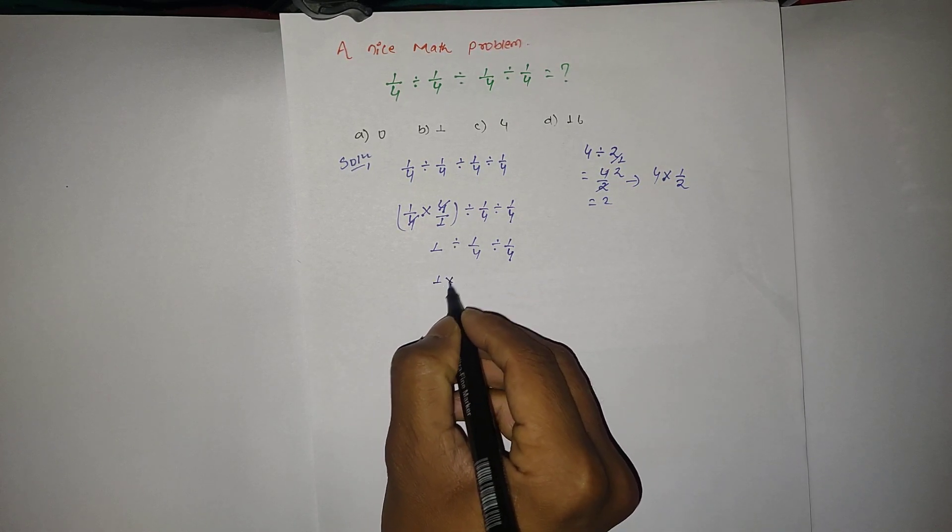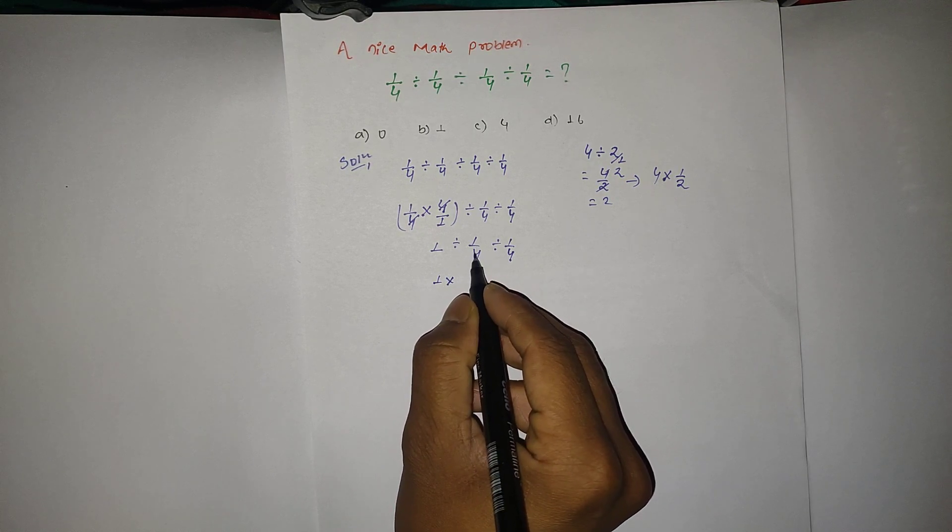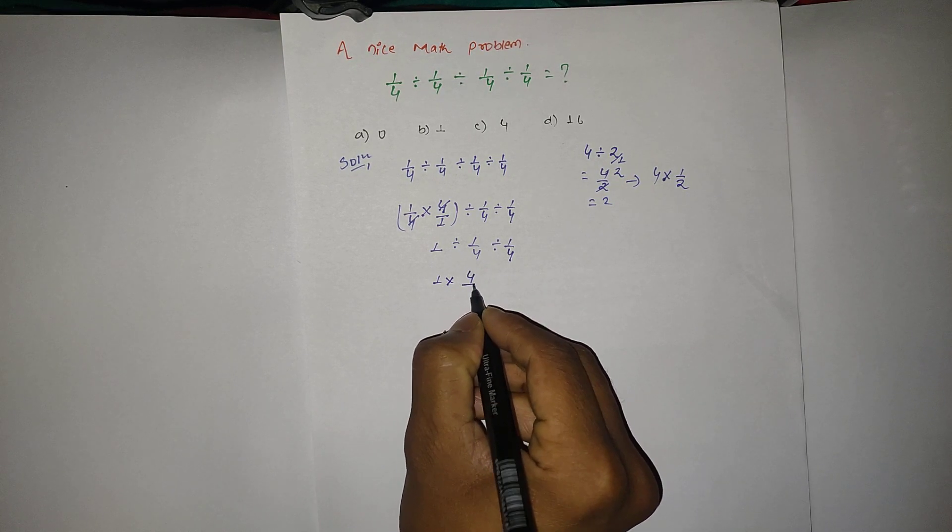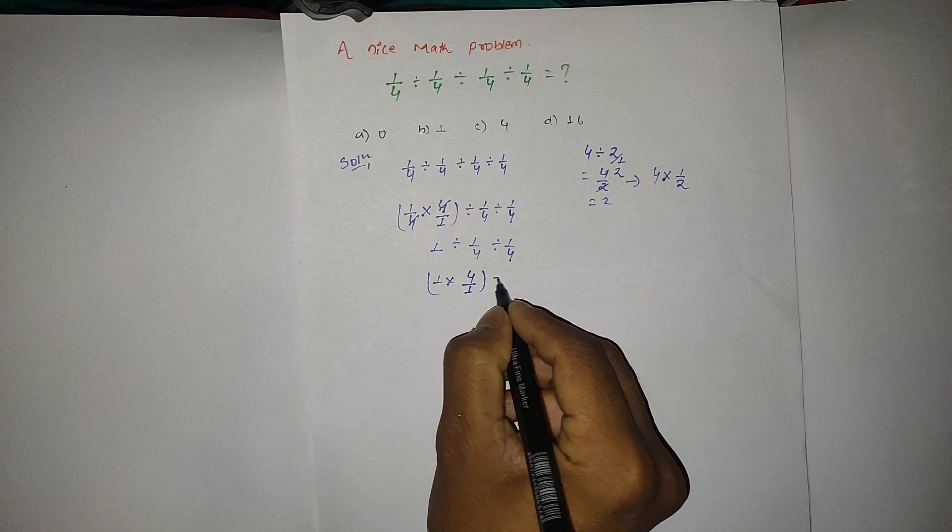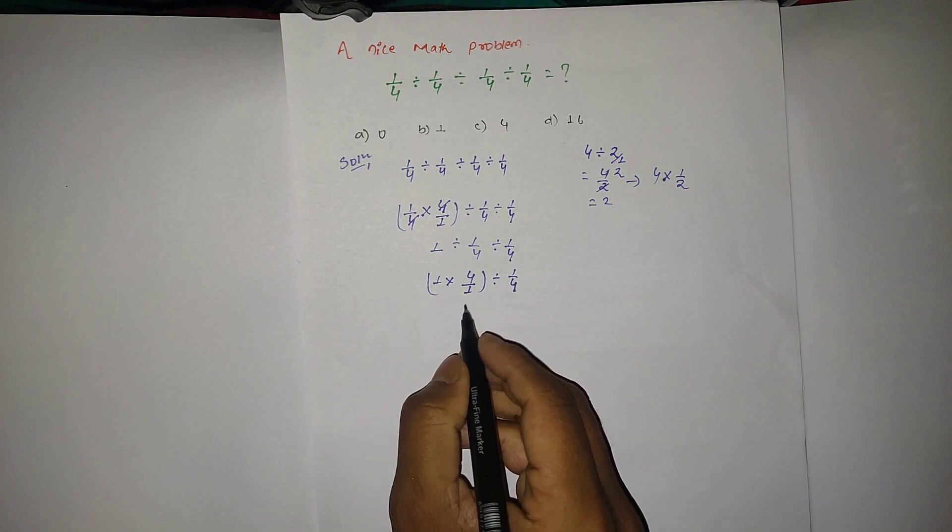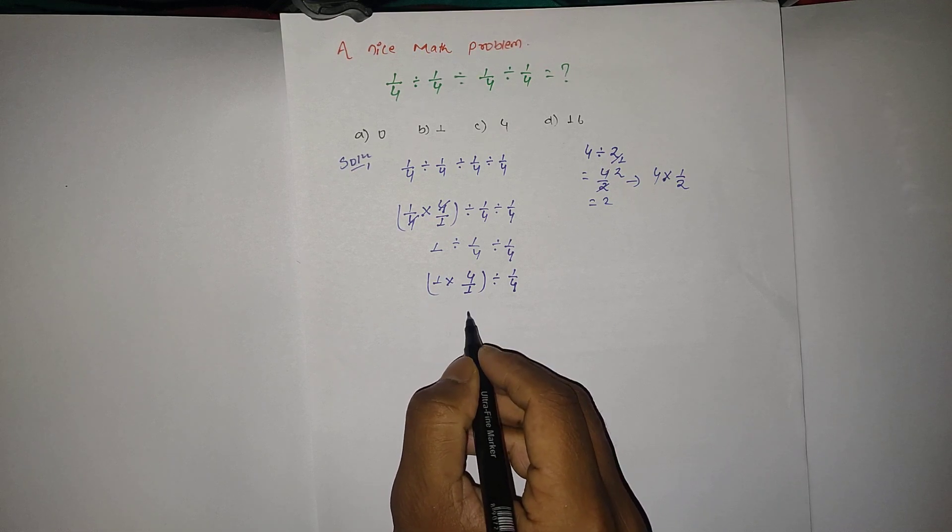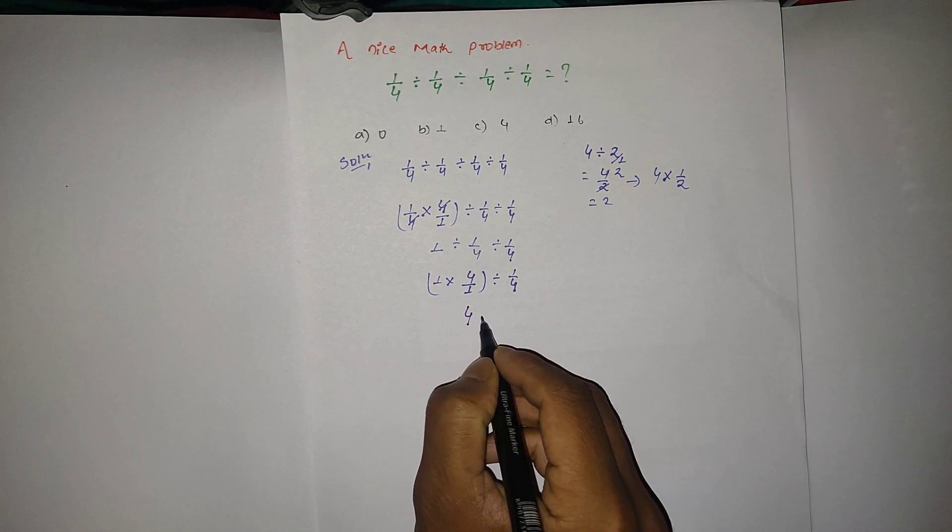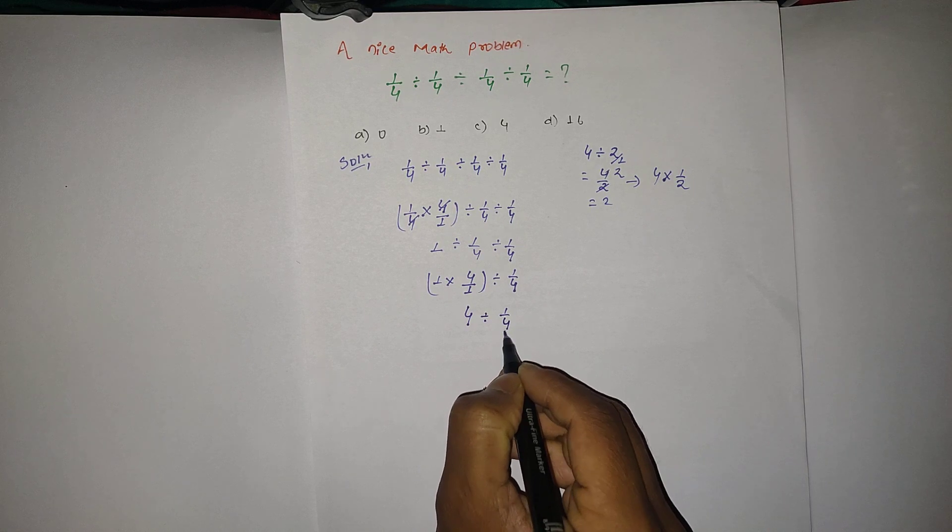Then again we have to flip this number to 4/1, and then divide by 1/4. So here again, 1 × 4 is 4, and 4 ÷ 1 is 4, and divide by 1/4.